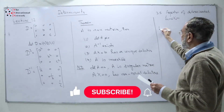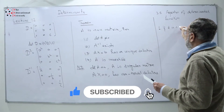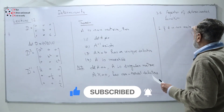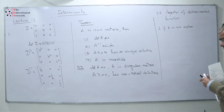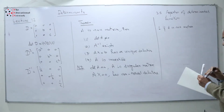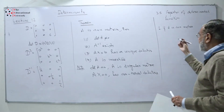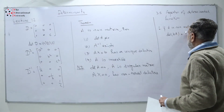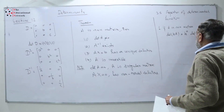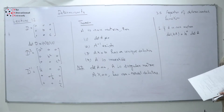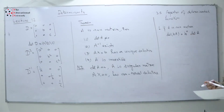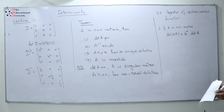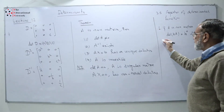The first property: if A is an n by n matrix and we have a scalar k, then determinant of kA is equal to k to the power n times determinant of A. When we take the matrix A multiplied by k, each entry is multiplied by k. We take k common from each of the n rows, so we get k to the power n out front.